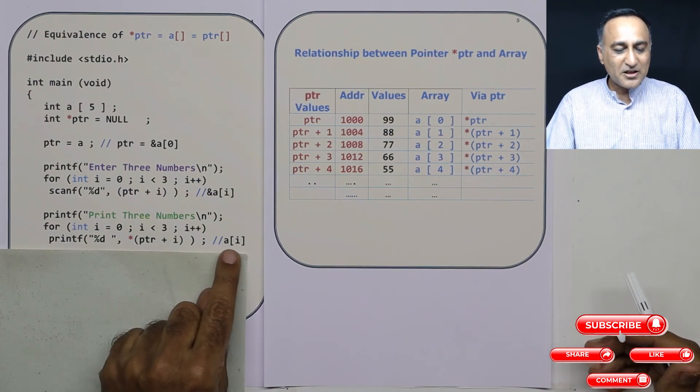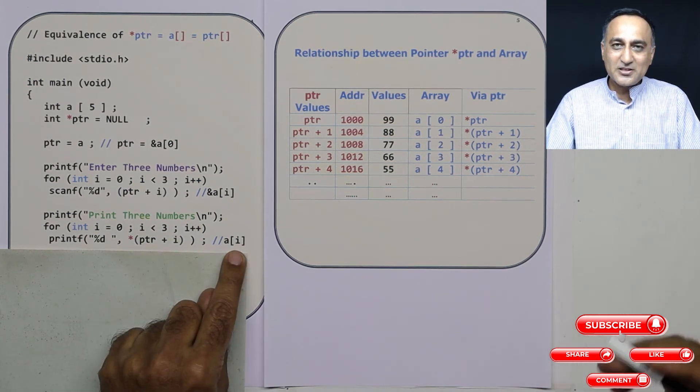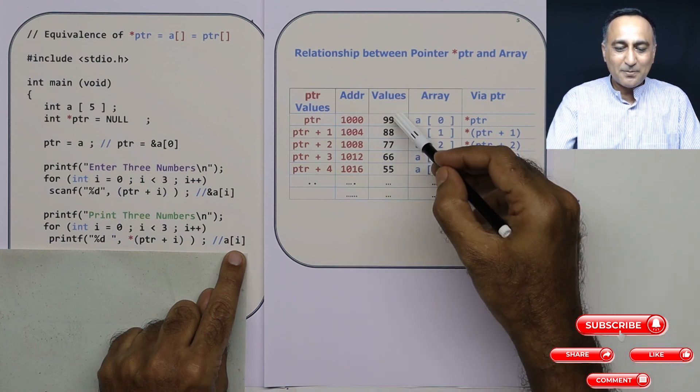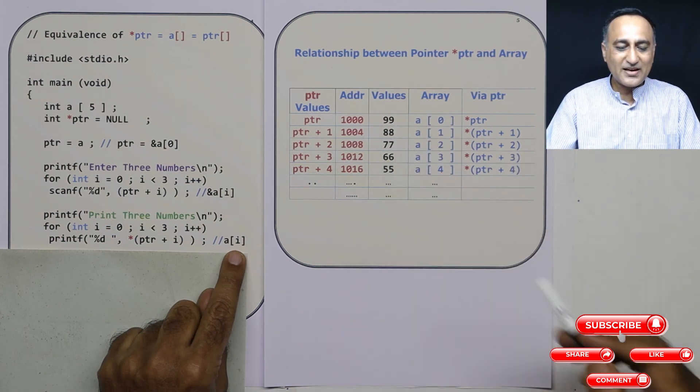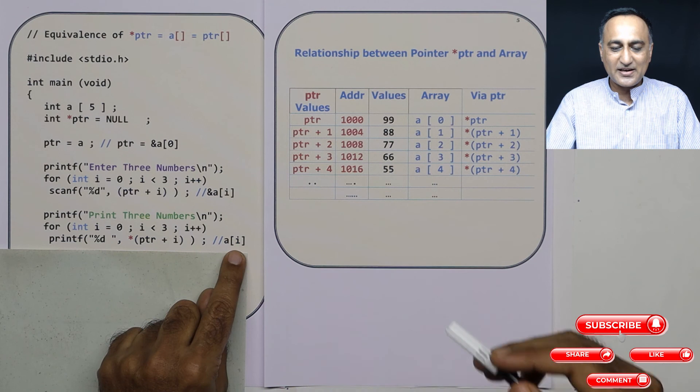Using ptr, I have said ptr[i] and I am still printing the numbers 99, 88, 77. Sorry, 99, 88 and 77.